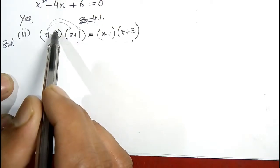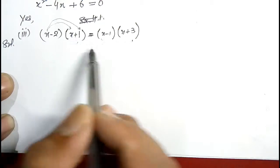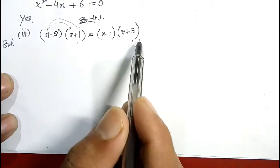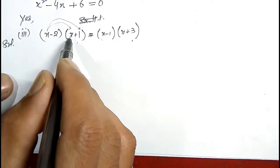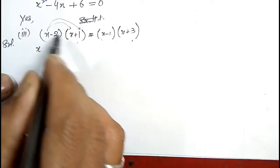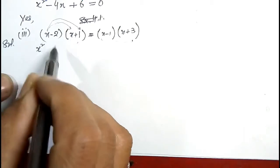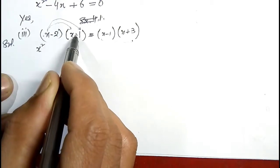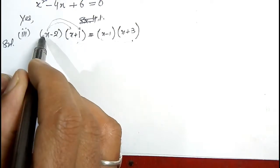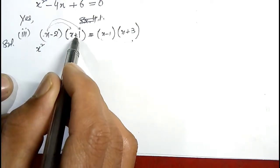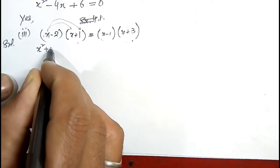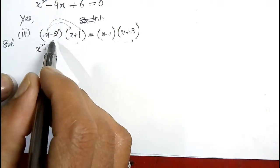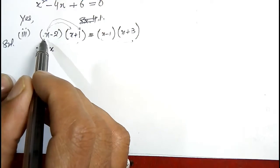Similarly, by the same procedure, I will also multiply the right hand side expression. First, x into x gives x squared. Since there is a plus sign, I multiply x by plus 1, which gives plus x. Then I multiply plus 1 by x giving plus x, so that becomes plus 2x. I have completed my first term multiplication.